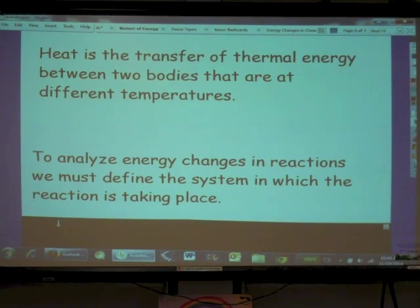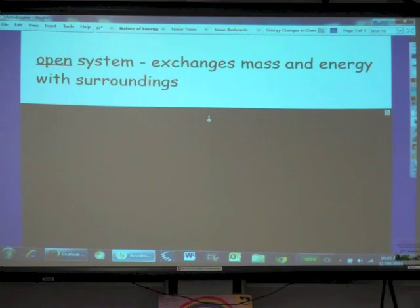So we do a lot of tracking of transfer of thermal energy or changes in heat. So to analyze energy changes in reactions, we have to define the system in which the reaction is taking place. So if our reaction is occurring in an open system, that means that there's going to be an exchange of mass and energy with the surroundings. So for example, if we have a little fire in an open beaker, so we've got some combustion going on. If it's an open system, if it's an open beaker, that means that the products, the carbon dioxide and the water vapor, those are going to go out into the surroundings. Okay? They're not going to stay in the system.